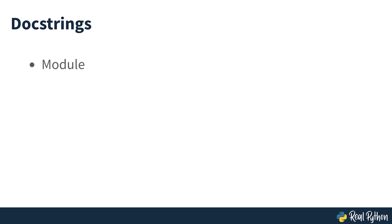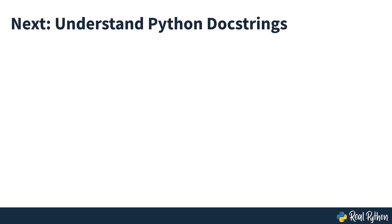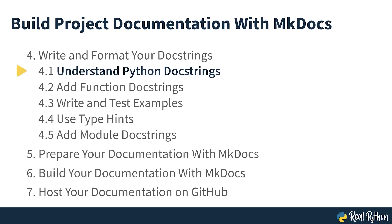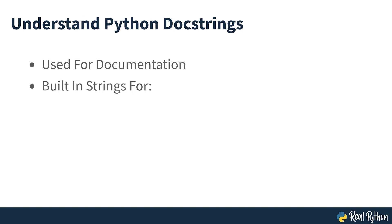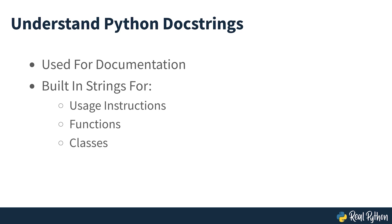In this section of the course, you'll write docstrings for your module, the contained functions, and your package. Let's start this process by taking a look at what a docstring is. Docstrings are your biggest help for documenting your Python code. They're built-in strings that you can configure to hold usage instructions and information about your functions, classes, and modules.